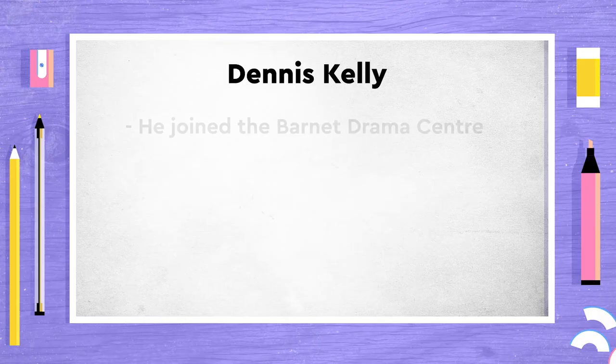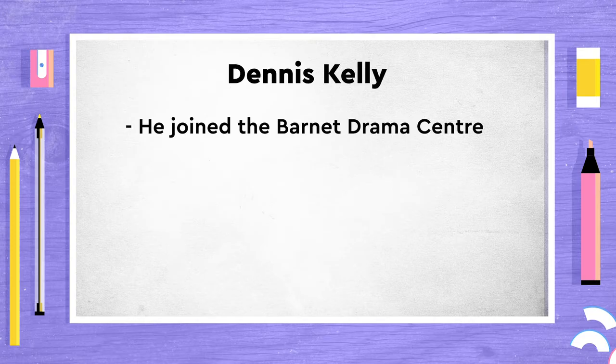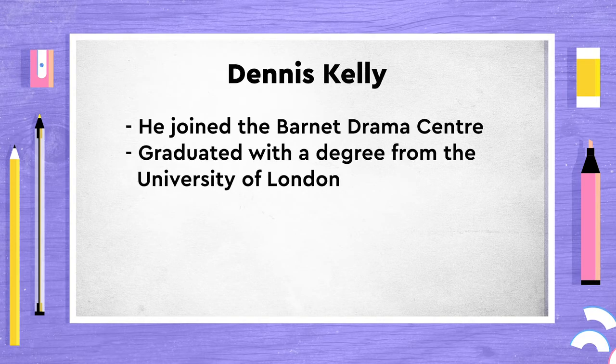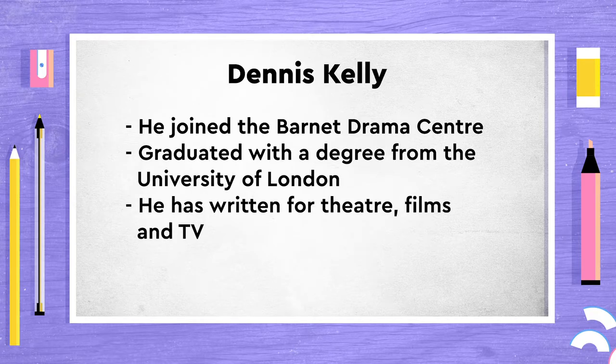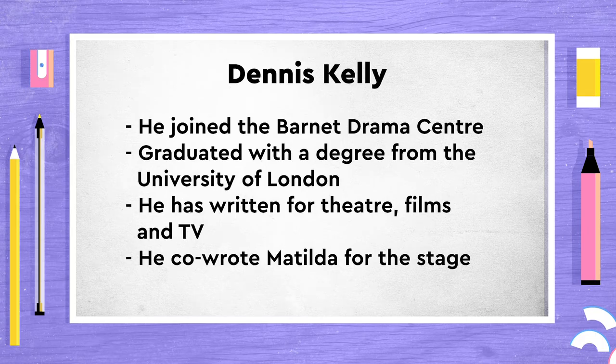Dennis Kelly was born in 1970 in North London and dropped out of school at 16. He dabbled in various retail jobs but at the same time started developing an interest in theatre and joined the Barnet Drama Centre. He not only acted but also started writing his own plays. Eventually, he went back to school and graduated with a degree in drama and theatre arts from the University of London. Since then, he's been a prolific writer and has written for theatre, films, and television. He even co-wrote the stage adaptation of Roald Dahl's Matilda.